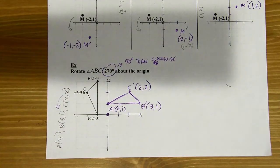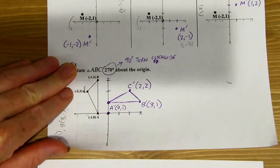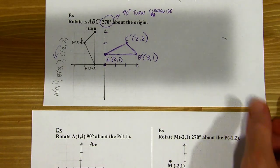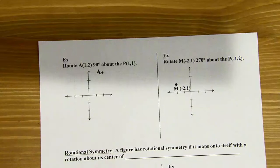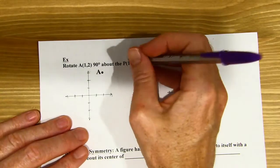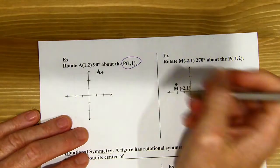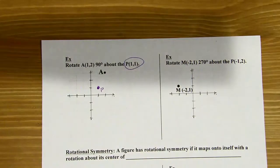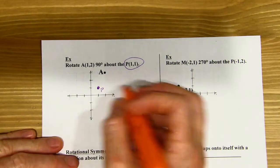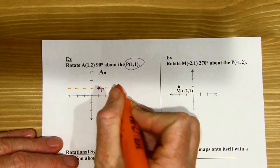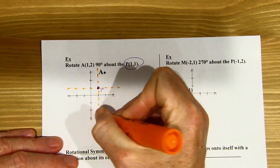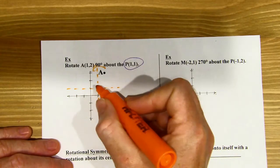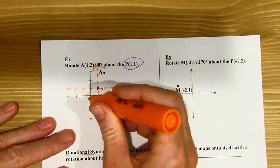Let's move on to the next set: rotations that are 90, 180, or 270 degrees, but not about the origin — a little trickier. What you want to do first is plot the center of rotation. The sun here is not at the origin; it's at the point (1, 1). So I plot that point, then pretend that point P is the center of a new xy-axis and draw some dashed lines. I'll ignore the original xy-axis and rotate 90 degrees about this new center.